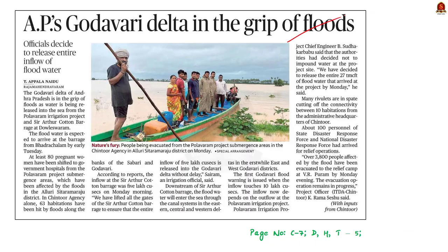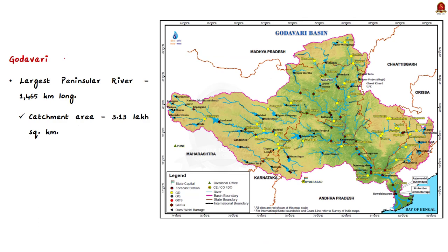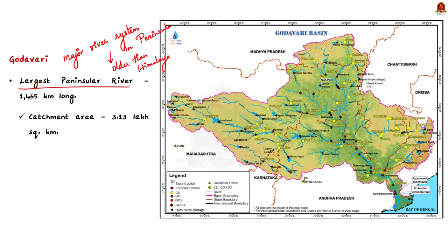This news article mentions that the Godavari delta is affected by floods because water from two projects - the Polavaram irrigation project and Sir Arthur Cotton barrage - is being released into the sea. Godavari is one of the major river systems of the peninsular drainage system, which is older than the Himalayan one. Godavari is the largest peninsular river system - among the rivers in peninsular India, Godavari is the largest one.